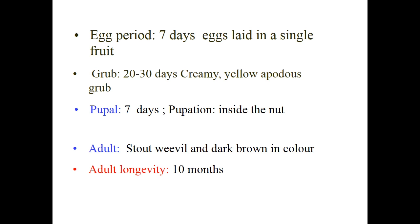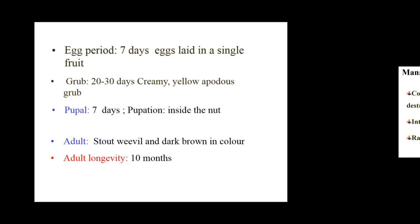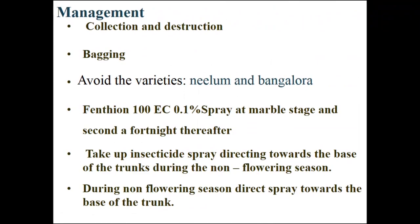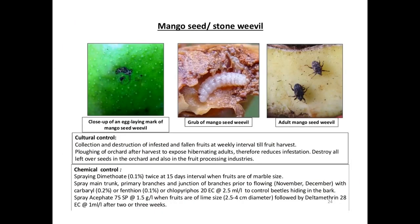Pupation takes place inside the seed. The pulp adjacent to the affected stone is seen discolored when the fruit is cut. Stone weevils spend winter under loose bark at the base of mango trees or in the fork of branches, or in leaf litter. Approximately 25% of adults overwinter in the seed. Adult weevils can live for two years, so even with crop failure in one season, some weevils survive to the following year.